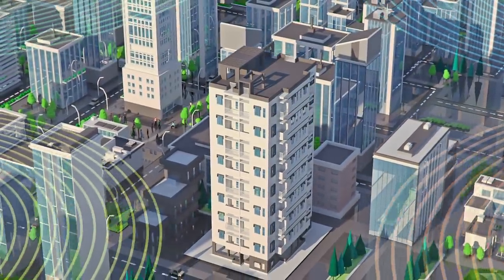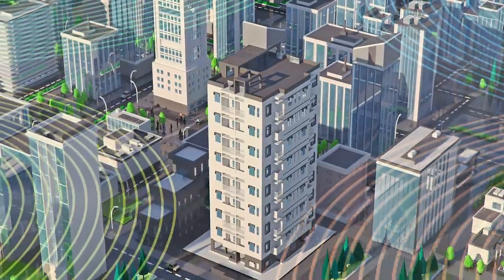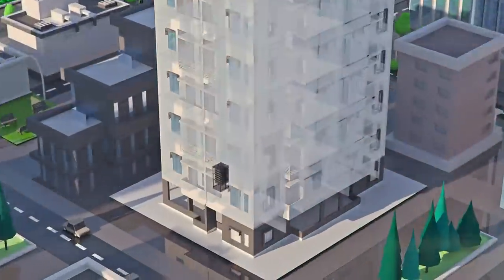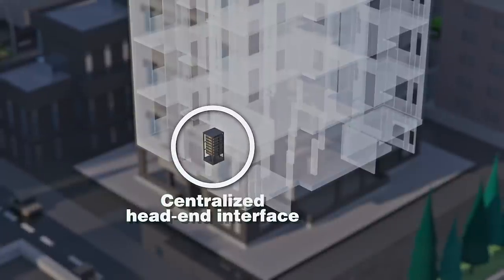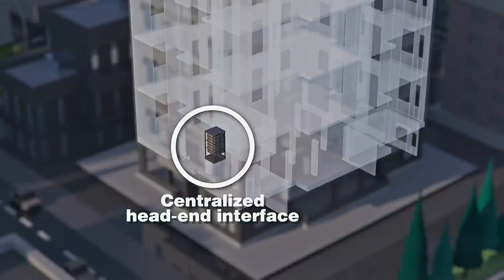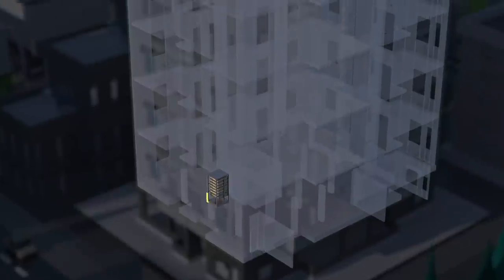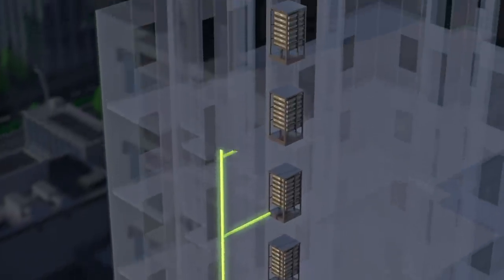Because the people in your building subscribe to different wireless service providers, the DAS accepts multiple radio inputs at a centralized head-end interface, usually located in an MDF or other IT room. The DAS head-end combines the signals at low power and converts them to light for distribution over fiber-optic cables.